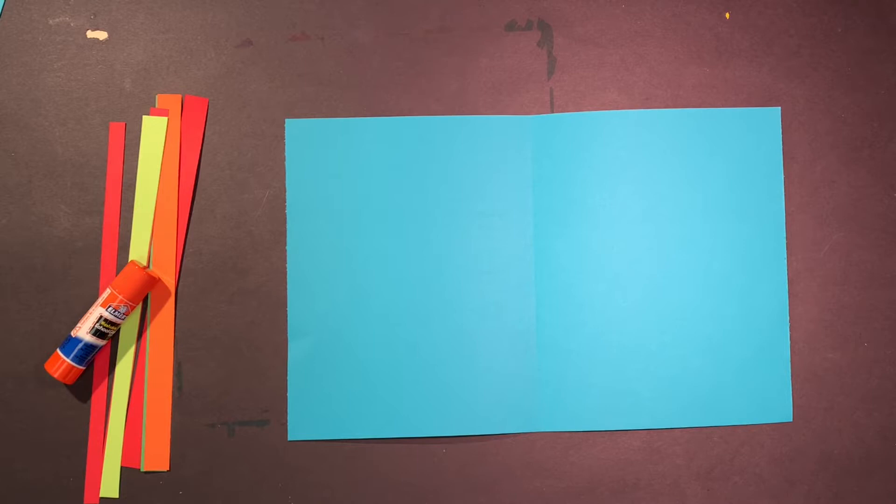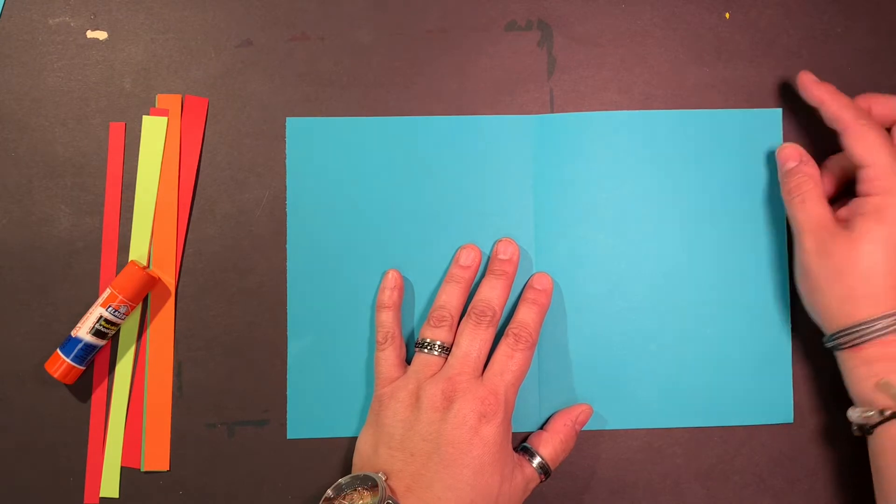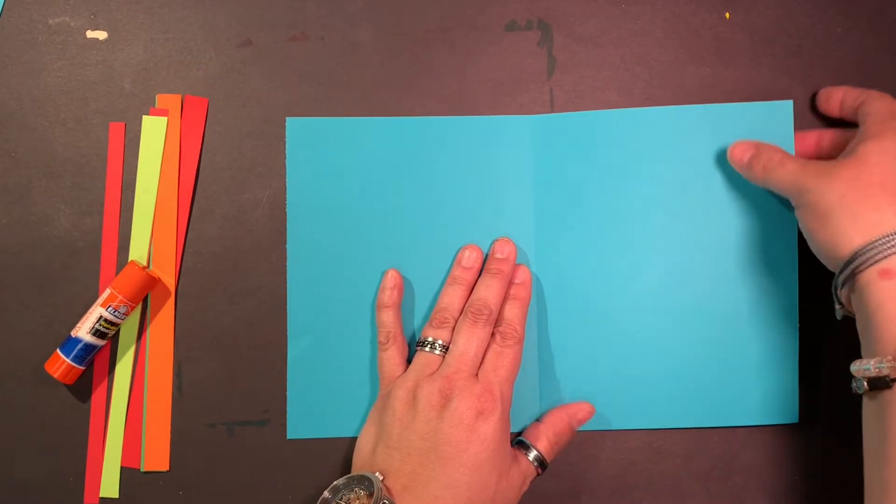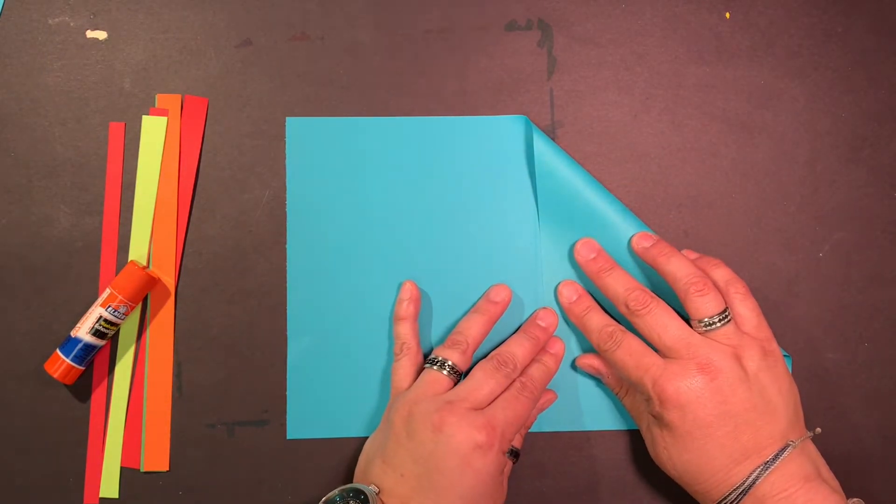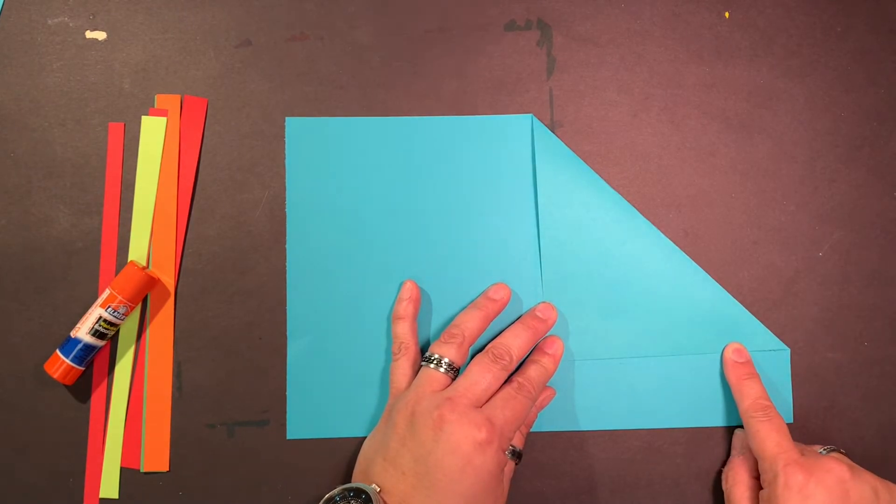We're going to use that to help us build our hat. So what we're going to do is we're going to take this corner and this side and lay it on this fold line. That's going to look like this. So it makes what shape when you do it correctly?